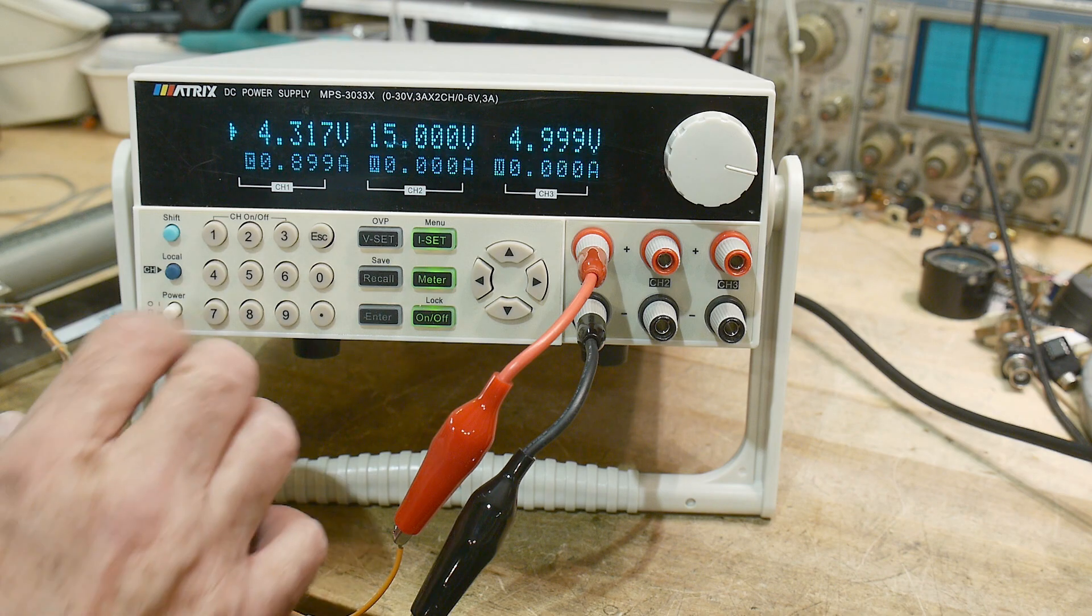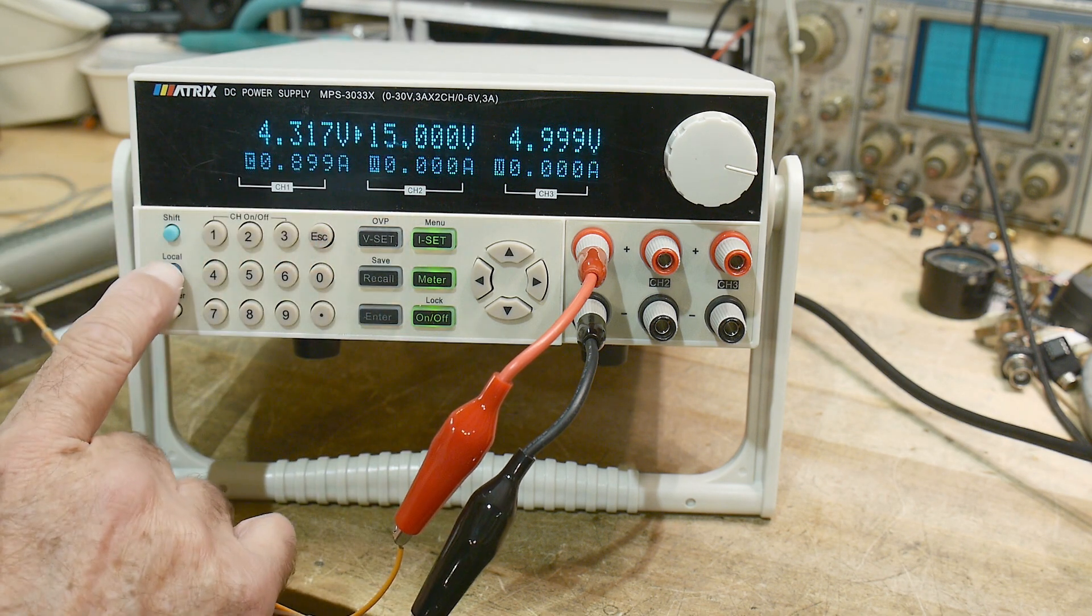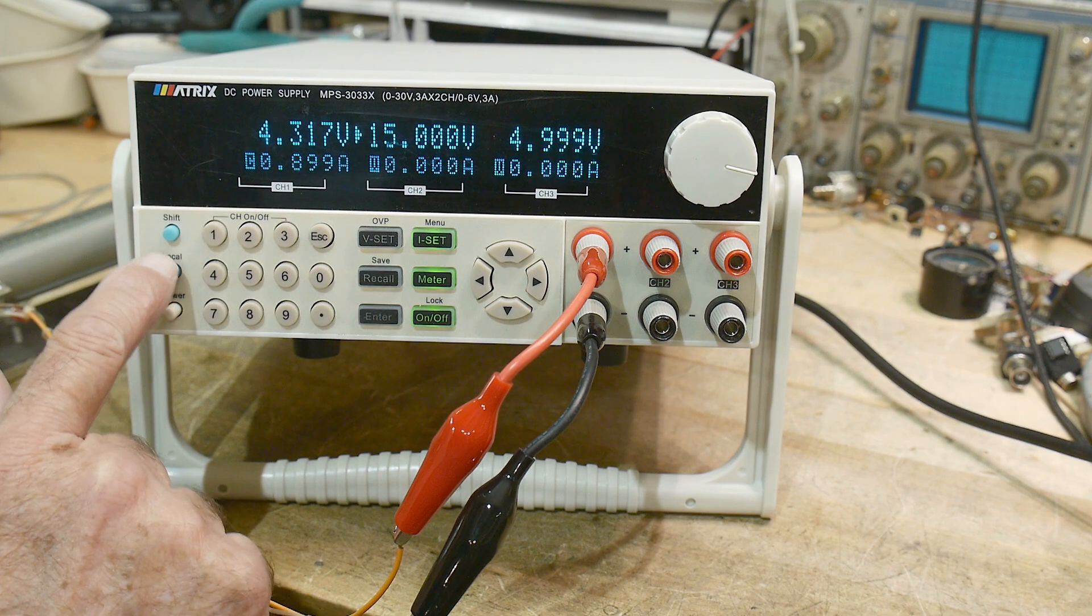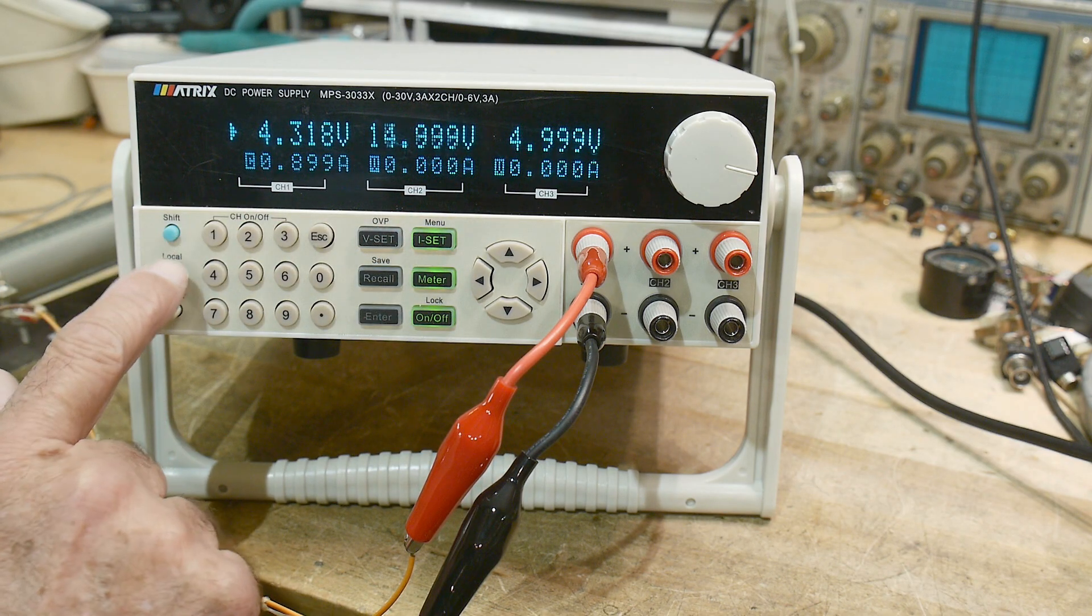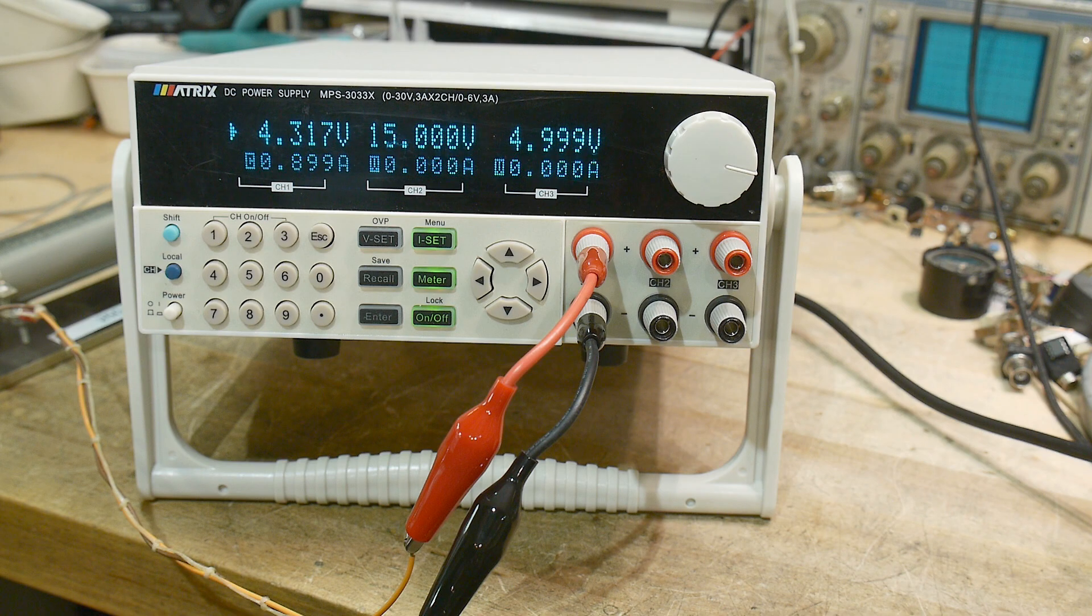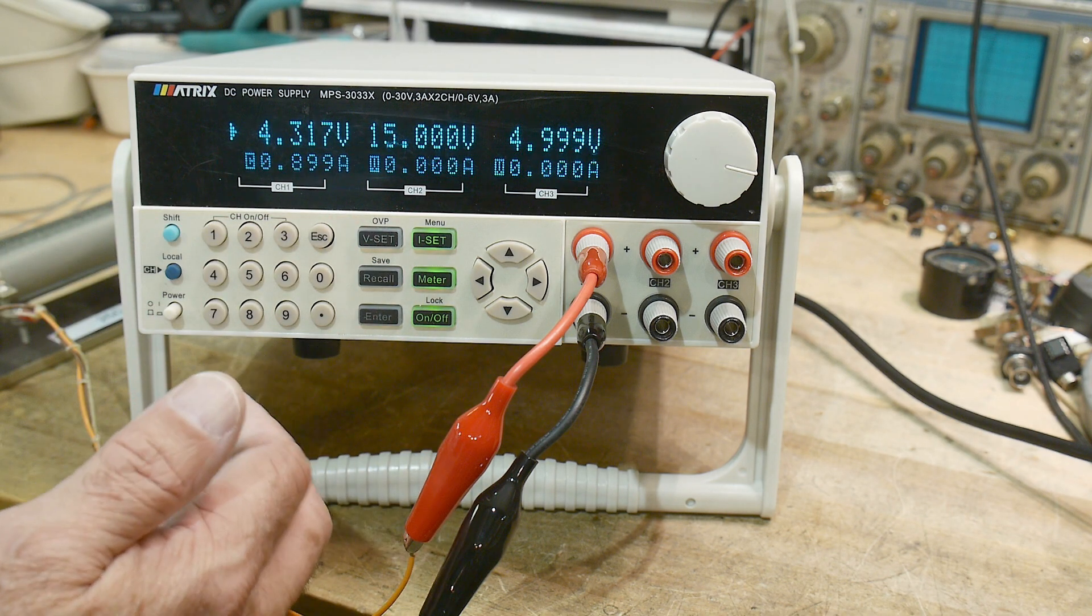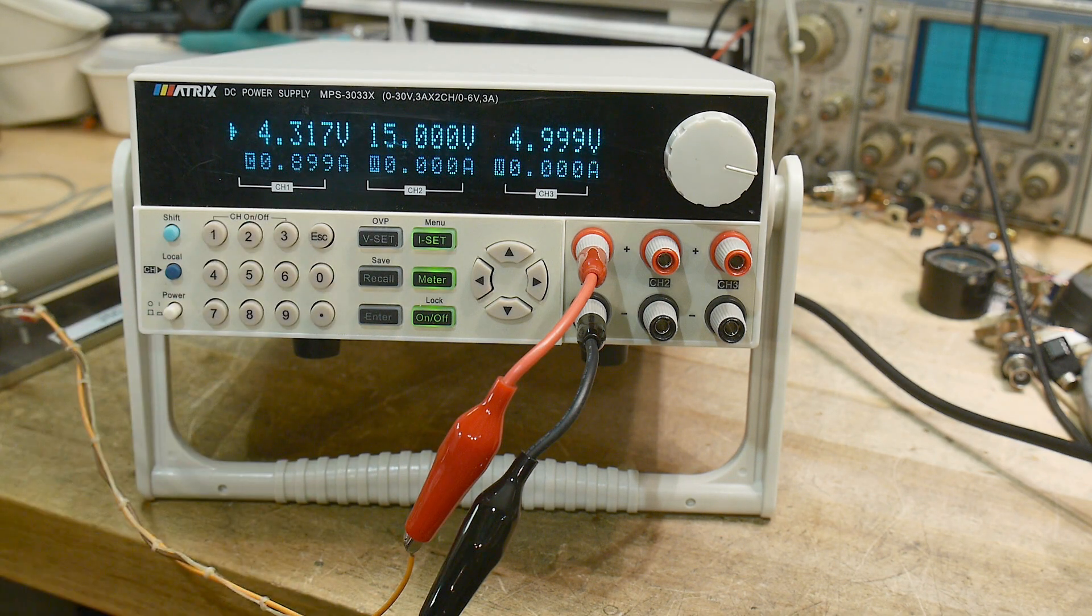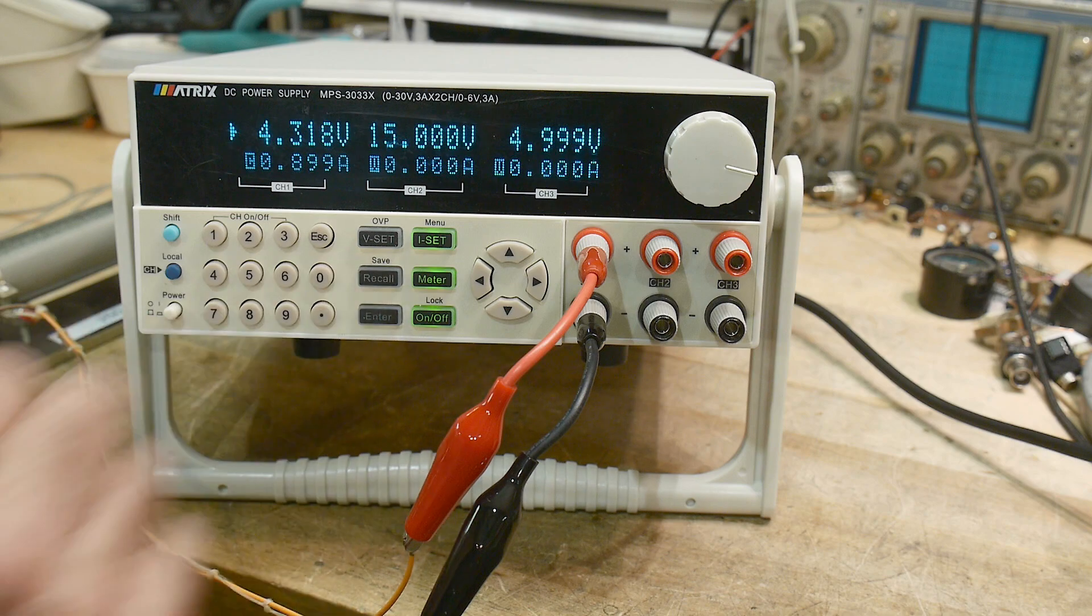You can hit this button that changes which channel you're talking to - channel one, channel two, channel three. I like this layout better than the Rigol - the Rigol has that weird round keypad, I'm not a big fan of that. I like a rectangular keyboard. It does have a memory, it has save and recall and stuff.